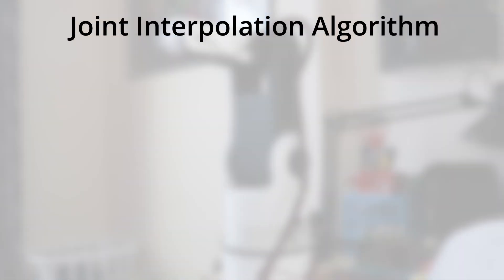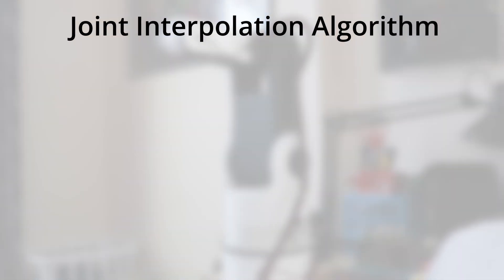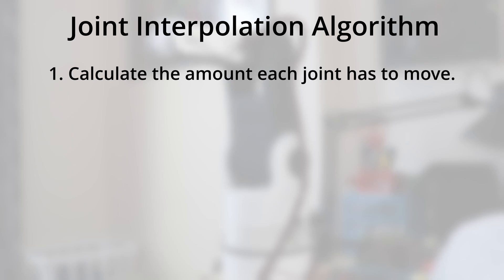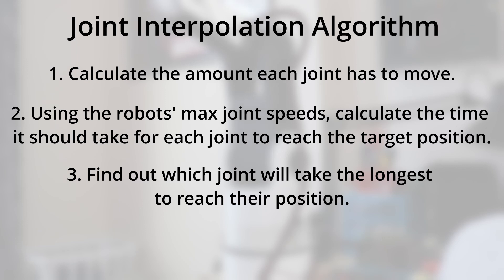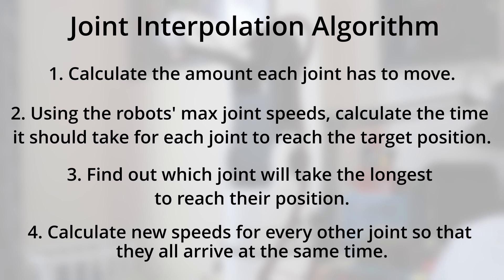The basic algorithm for joint interpolation goes something like this. First, we calculate the amount each joint has to move. Second, using the robot's max joint speeds, we calculate the time it takes for each joint to reach the target position. Third, we find out which joint will take the longest to reach its position. And finally, we calculate new speeds for every other joint so that they all arrive at the same time.